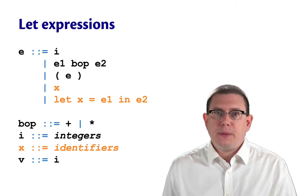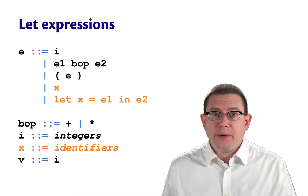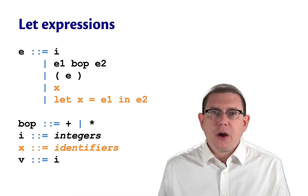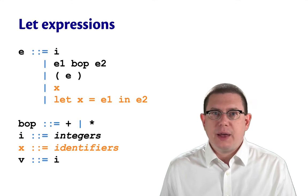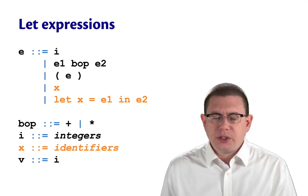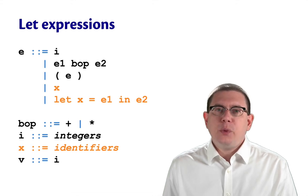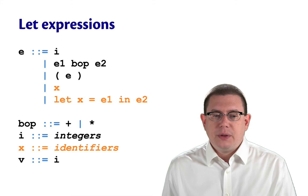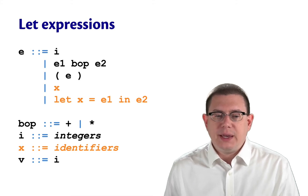Variables will be represented by the meta variable x, which stands for identifiers. We're not going to carefully specify here what the syntactic class of identifiers is. We will have to do that in our parser and lexer. And we will add let expressions just like they are from OCaml. Let x equal e1 in e2.